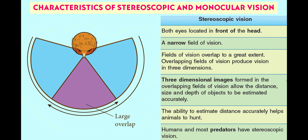Animals with stereoscopic vision have a narrow field of vision; however, their fields of vision overlap to a great extent. Overlapping fields of vision produce vision in three dimensions, also known as 3D vision. 3D images formed in the overlapping fields of vision allow the animals to estimate the distance, size, and depth of objects accurately.